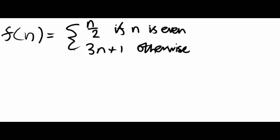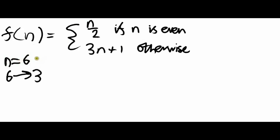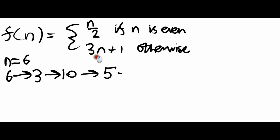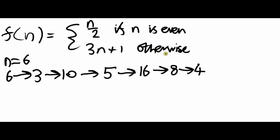Let's have a look at how this works in practice. Suppose we start with the initial condition n equals 6 and we're just going to repeatedly update it according to this operator. We start with 6 — 6 is even, so we divide it by 2 and get 3. 3 is odd, so we times it by 3 and add 1, we get 10. 10 is even, so we divide it by 2, getting 5, which is odd. So we times it by 3 and add 1, getting 16, which is even. So we divide by 2: 8, divide by 2: 4, divide by 2: 2, divide by 2: 1.